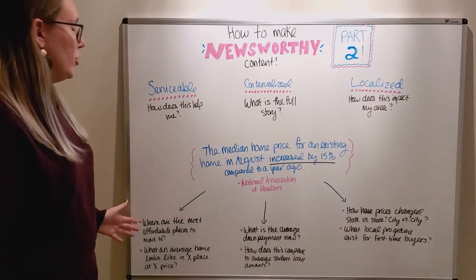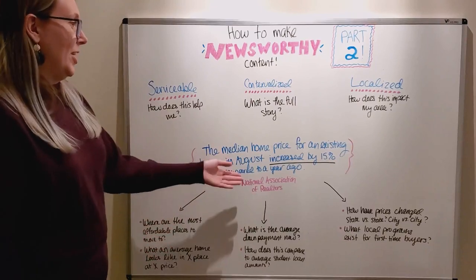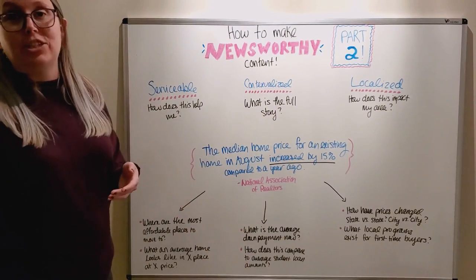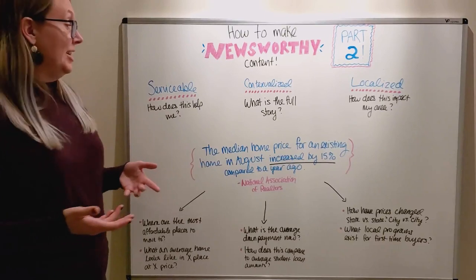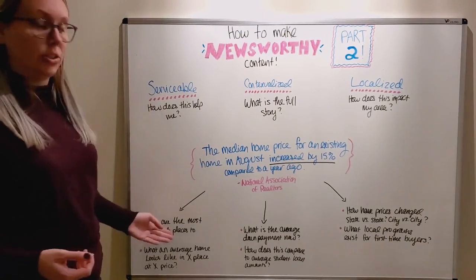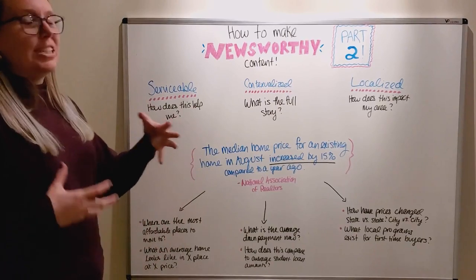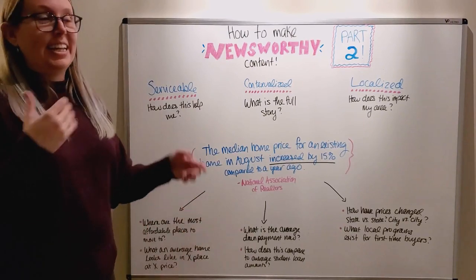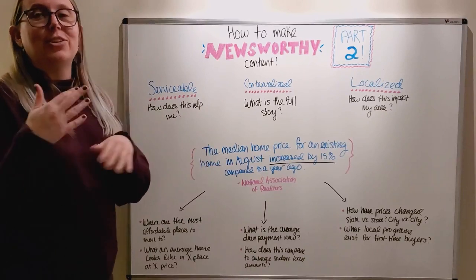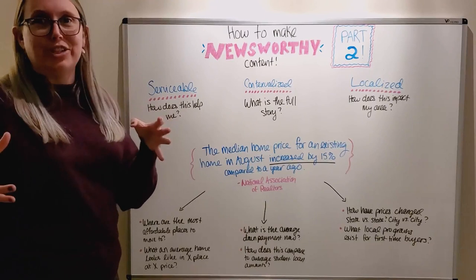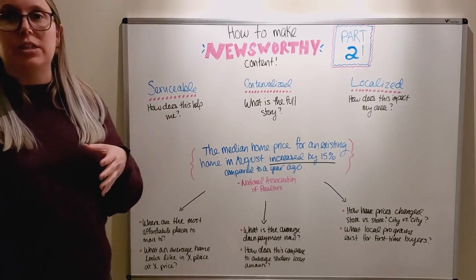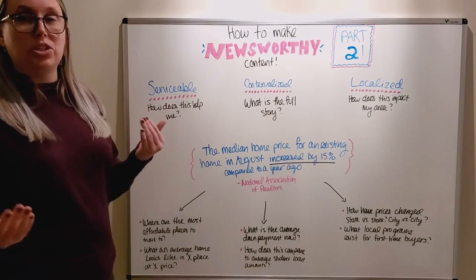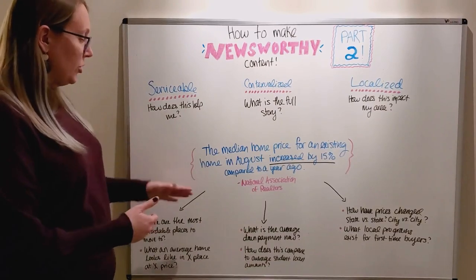One angle I thought of: where are the most affordable places to live? We're finding that home prices are going up, so it's a practical, helpful thing to know where it could actually be affordable to move. If people were thinking about moving, at least now they can have their options. Going a little deeper — or even just a different way of approaching the same conversation — is what an average home looks like in X place at X price. If you take those increased prices and show examples of what a home looks like, it's a different way of illustrating the same useful point: where could I actually see myself living? That's what makes it serviceable — you're giving them information they can actually act on.